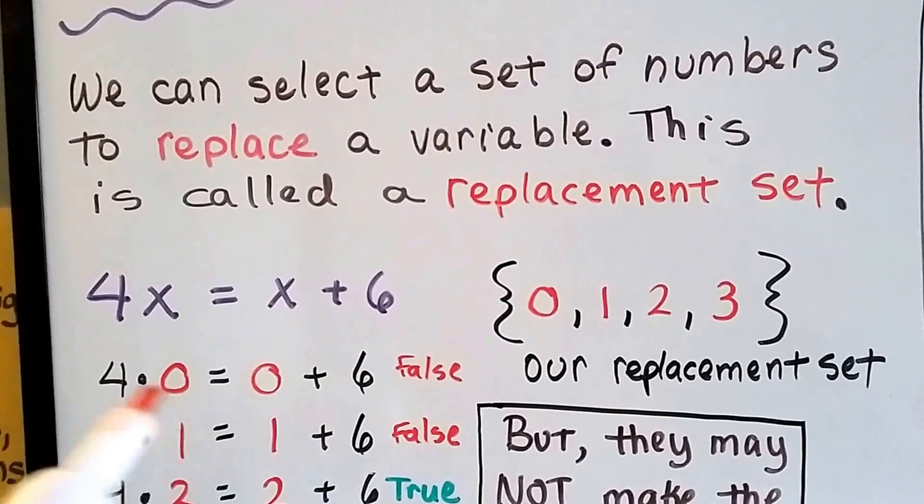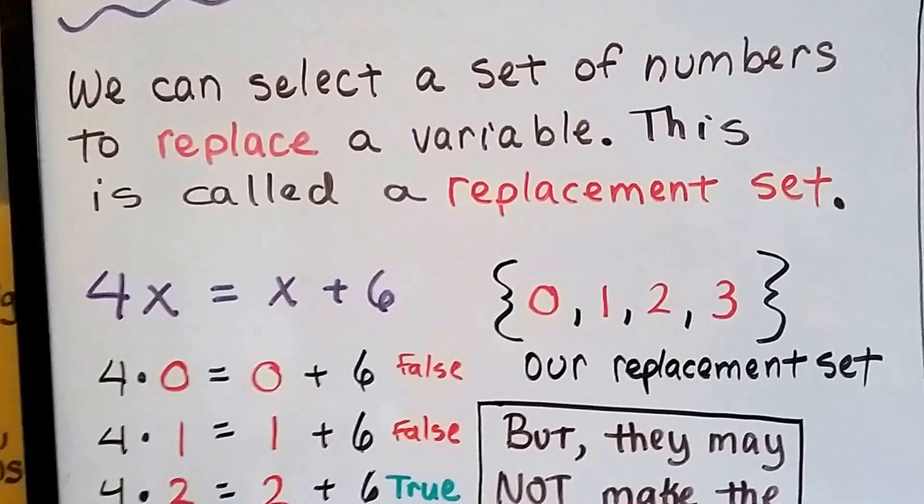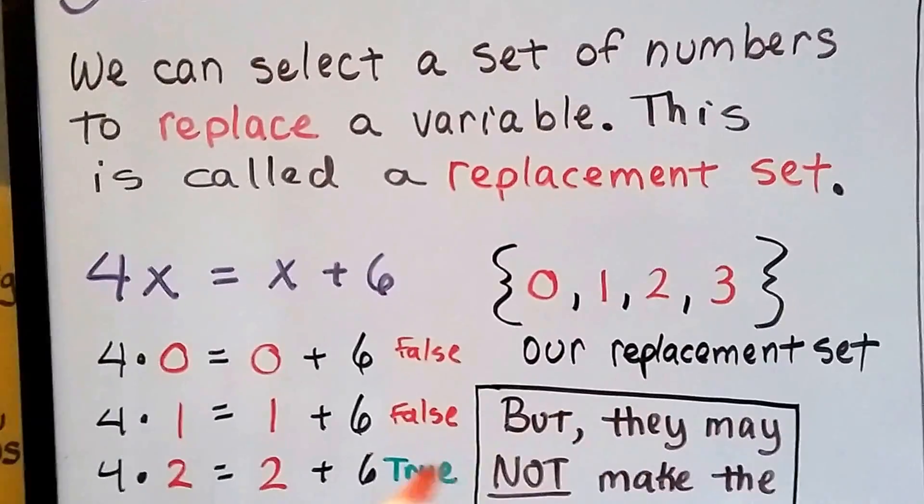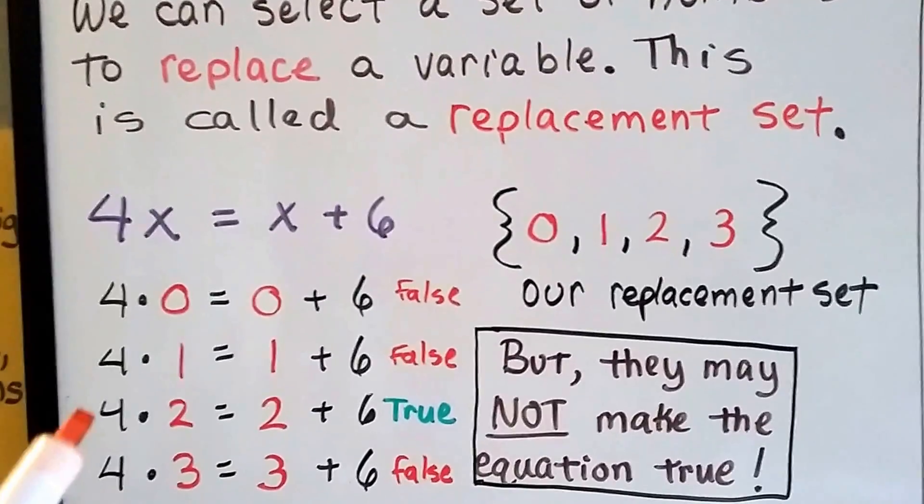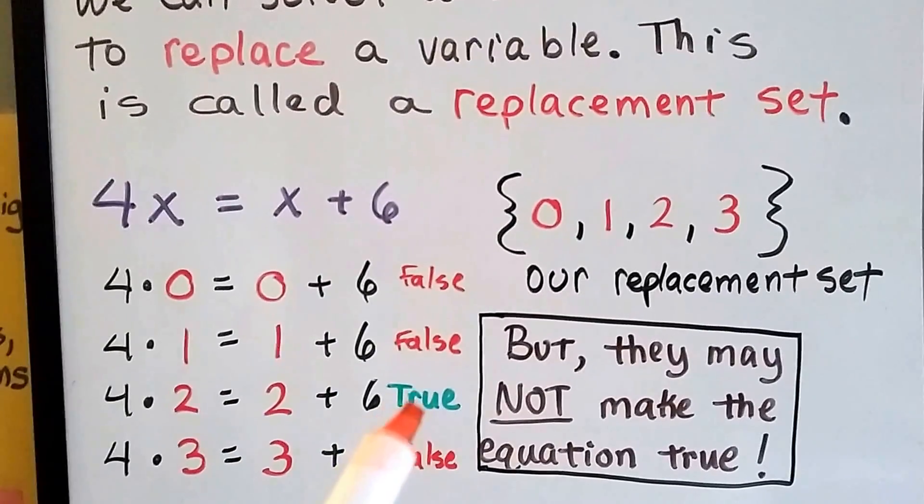And 4 times 0 is not equal to 0 plus 6. 4 times 0 is 0, and 0 plus 6 is 6. That's false. What about 2 and 3? Those are in our replacement set. 4 times 2 is 8 equals 2 plus 6 is 8? Yes, that's true.